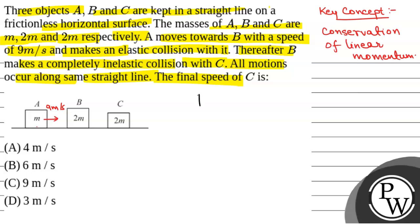We will have a case. A moves at 9 meter per second, and B is at rest. A is M, this is 2M. This is before collision. And after collision, A is V1 and B is V2. This is 2M and this is M.